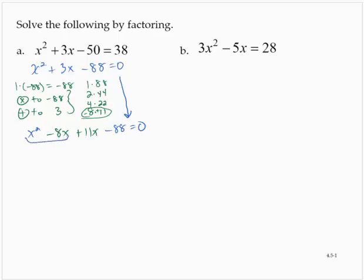Using the grouping technique, x by x minus 8 plus 11 by x minus 8 is 0, which implies that x minus 8 by x plus 11 is 0.